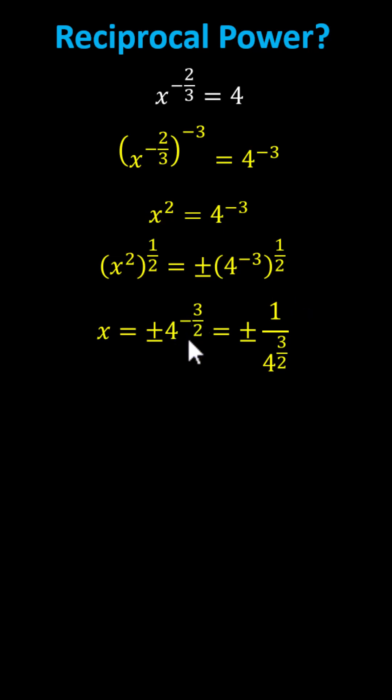Recall four to the power of negative three-halves is equal to one divided by four to the power of three-halves. And now to simplify four to the power of three-halves, we'll convert back to radical form, where we recall that two is the index and three is the exponent. Four to the power of three-halves is equivalent to the cube of the square root of four.